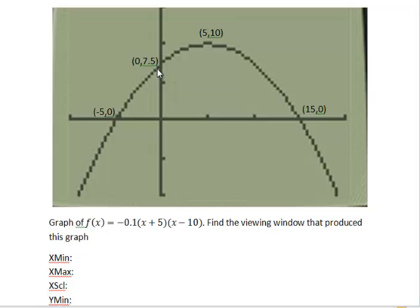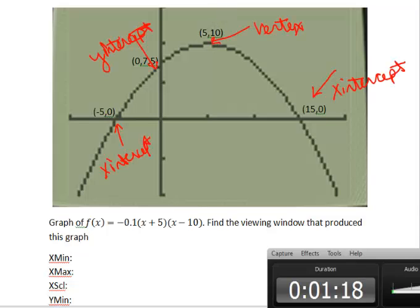We've been given the y-intercept labeled 0, 7.5. And we've been given the very peak point, the maximum point, called the vertex, and that's 5, 10. In this problem, we'd like to identify the viewing window that's being used. We can use the points that have been given to us to help us identify what viewing window this is.